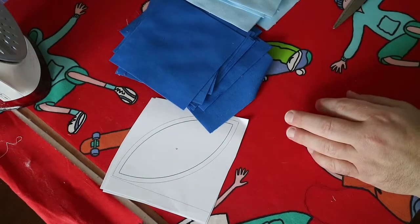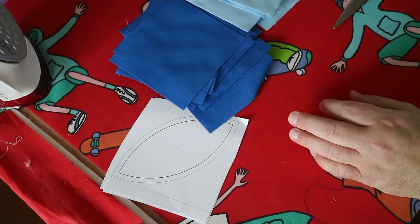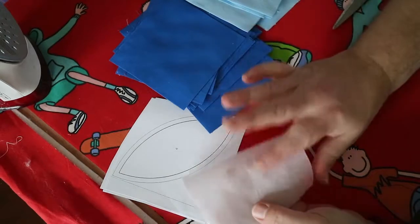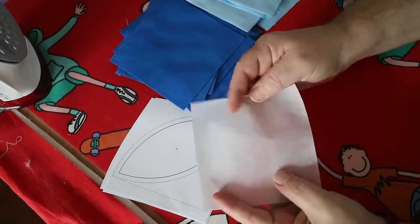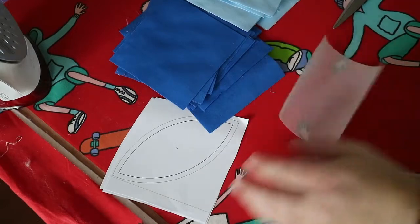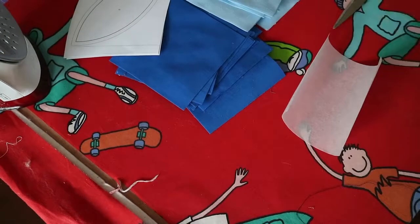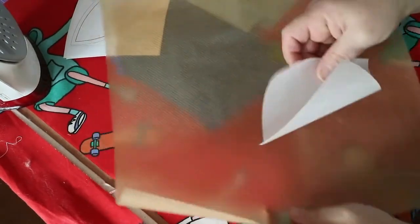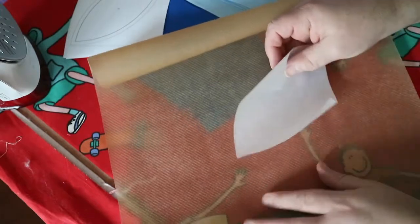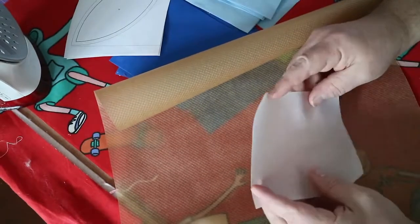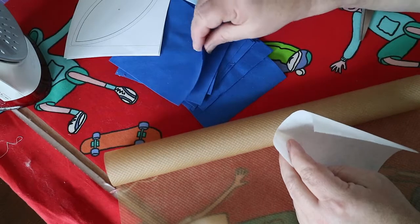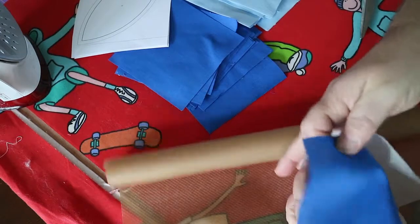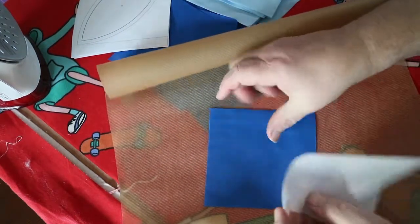The first I'm going to show you how to do is bond-a-web, which is a double-sided sticky. It has paper on one side and it's sticky on the other. What I do is I use a piece of baking paper which protects everything from the sticky, because sometimes it can ooze out. So it will protect your ironing board and it will protect your iron from collecting this sticky stuff.